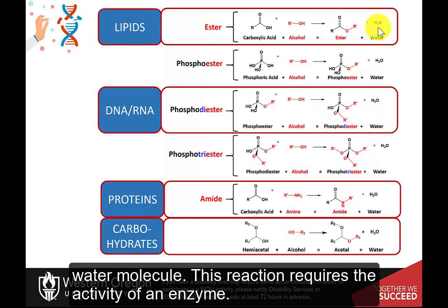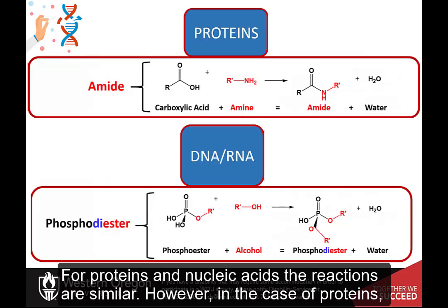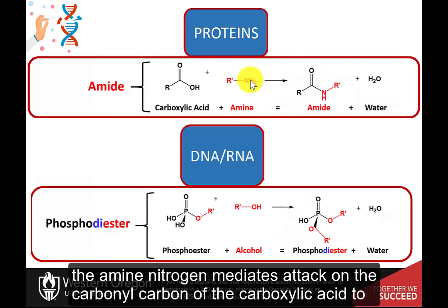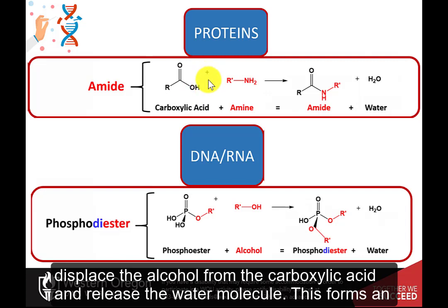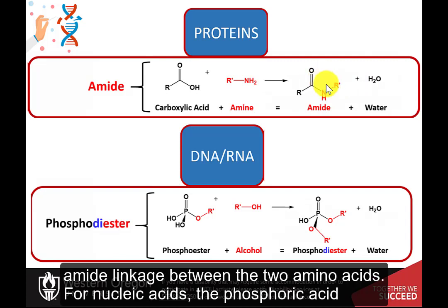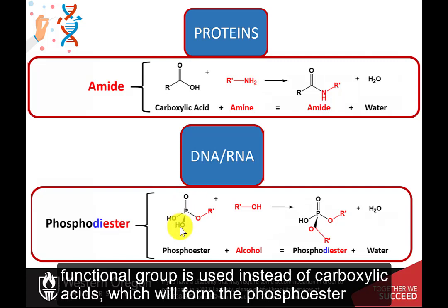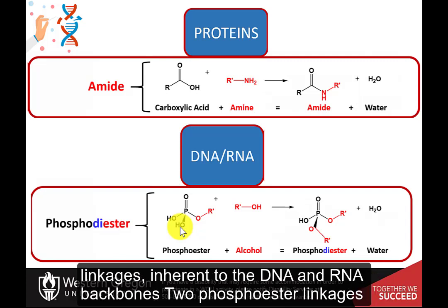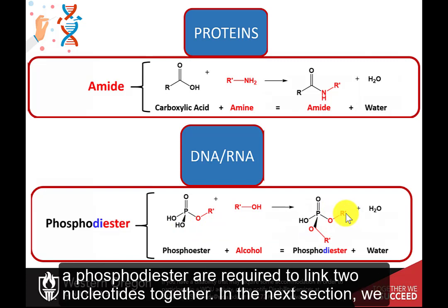This reaction requires the activity of an enzyme. For proteins and nucleic acids, the reactions are similar. However, in the case of proteins, the amine nitrogen mediates attack on the carbonyl carbon of the carboxylic acid to displace the alcohol from the carboxylic acid and release the water molecule. This forms an amide linkage between the two amino acids. For nucleic acids, the phosphoric acid functional group is used instead of carboxylic acids, which will form the phosphoester linkages inherent to the DNA and RNA backbones. Two phosphoester linkages — a phosphodiester — are required to link two nucleotides together.